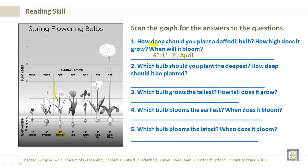Which bulb should you plant the deepest? How deep should it be planted? That would be the tulip, at seven inches deep. Which bulb grows the tallest? How tall does it grow? That would be the giant allium, at four feet.